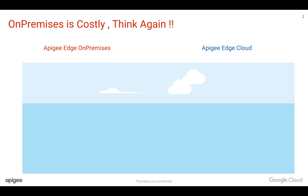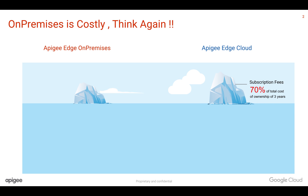Let's see the differences between Apigee Edge on-premises and Apigee Edge cloud when it comes to cost. Using Apigee Edge on-premises is like an iceberg. In the beginning, Apigee Edge cloud looks costly and Apigee Edge on-premises looks cheap when it comes to purchasing the software. But longer term, it's a different case. Initially, the subscription fees of Apigee Edge cloud look like 70% of total cost of ownership over 3 years, while on-premise looks relatively less — say 20% of total cost of ownership over 3 years.